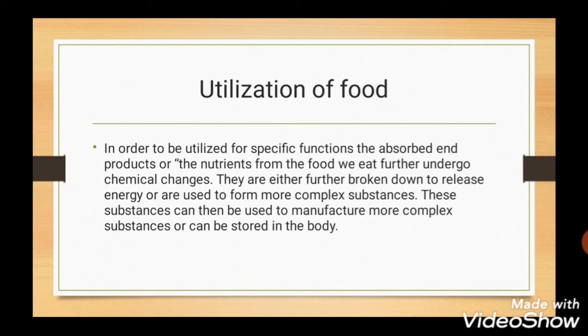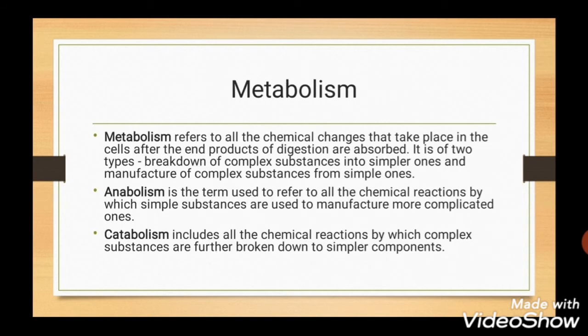Utilization of food. After digestion and absorption, the nutrients undergo chemical changes — either they are further broken down to release energy, or are used to form more complex substances. Metabolism refers to all the chemical changes that take place in cells after the end products of digestion are absorbed. It is of two types: anabolism, which refers to chemical reactions by which simple substances are used to manufacture more complicated ones, and catabolism, which refers to chemical reactions by which complex substances are broken down to simpler components.